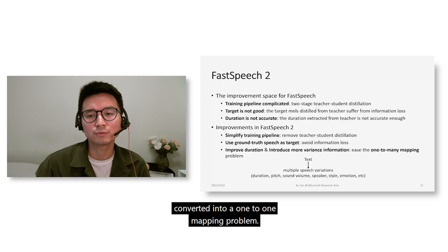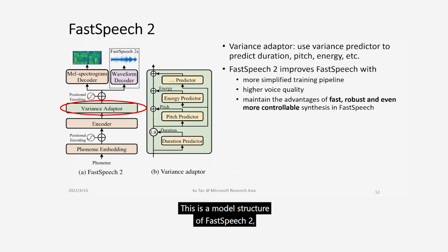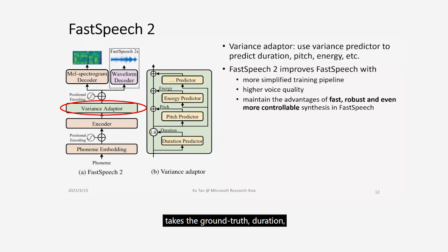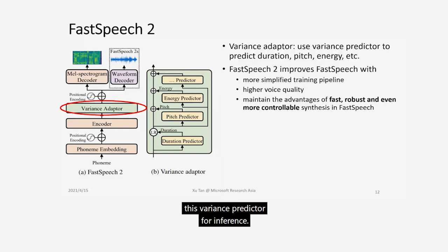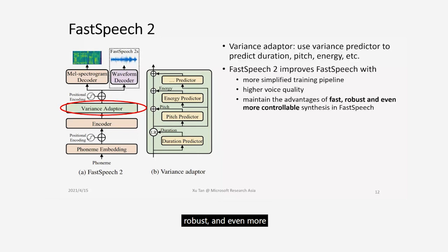By providing more information such as duration, pitch, and energy as inputs, the one-to-many mapping problem is converted into a one-to-one mapping, easing model training and improving generalization. FastSpeech 2 uses a variance adapter between the phoneme encoder and mel spectrum decoder. The variance adapter contains different variance predictors for duration, pitch, and energy. During training, the decoder takes ground-truth values as input; during inference, it uses predicted values. FastSpeech 2 achieves a more simplified training pipeline, higher voice quality, and maintains the fast, robust, and even more controllable synthesis of FastSpeech.